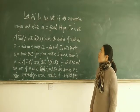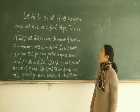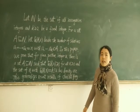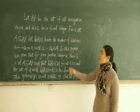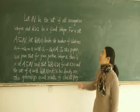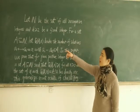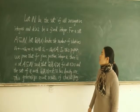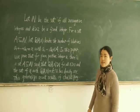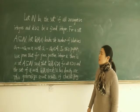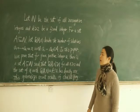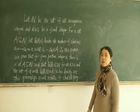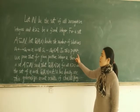Let A be the set of all non-negative integers and K greater than 2 be a fixed integer. For a set A, let RK(A) denote the number of solutions A1 plus A1 plus ... plus A1 equal to A — that is, the number of representations in this table.